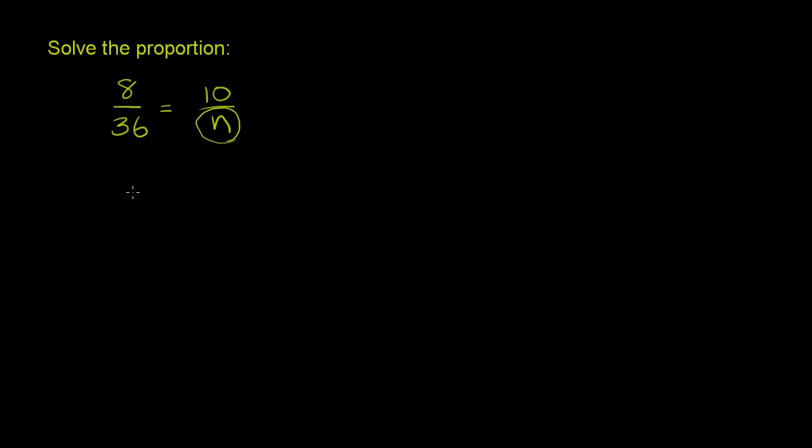And the easiest way to do this is to multiply both sides of this equation by both denominators. So if we multiply both sides of this equation by n, what do we get? Let's multiply it first by n.